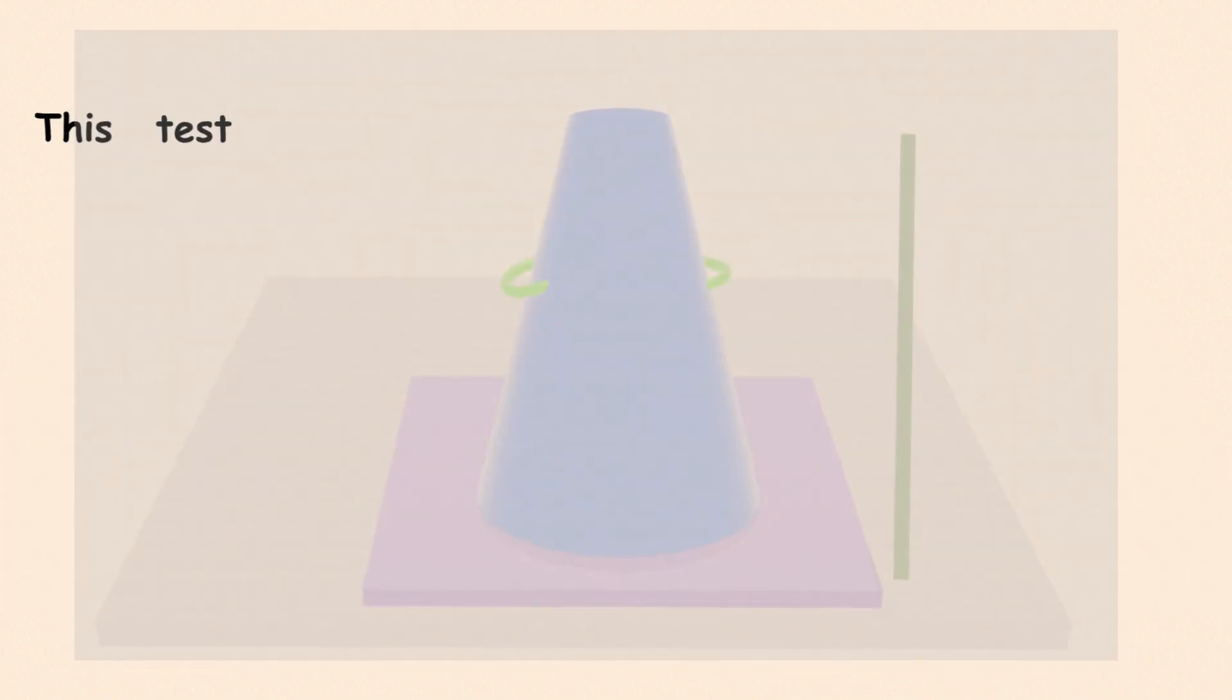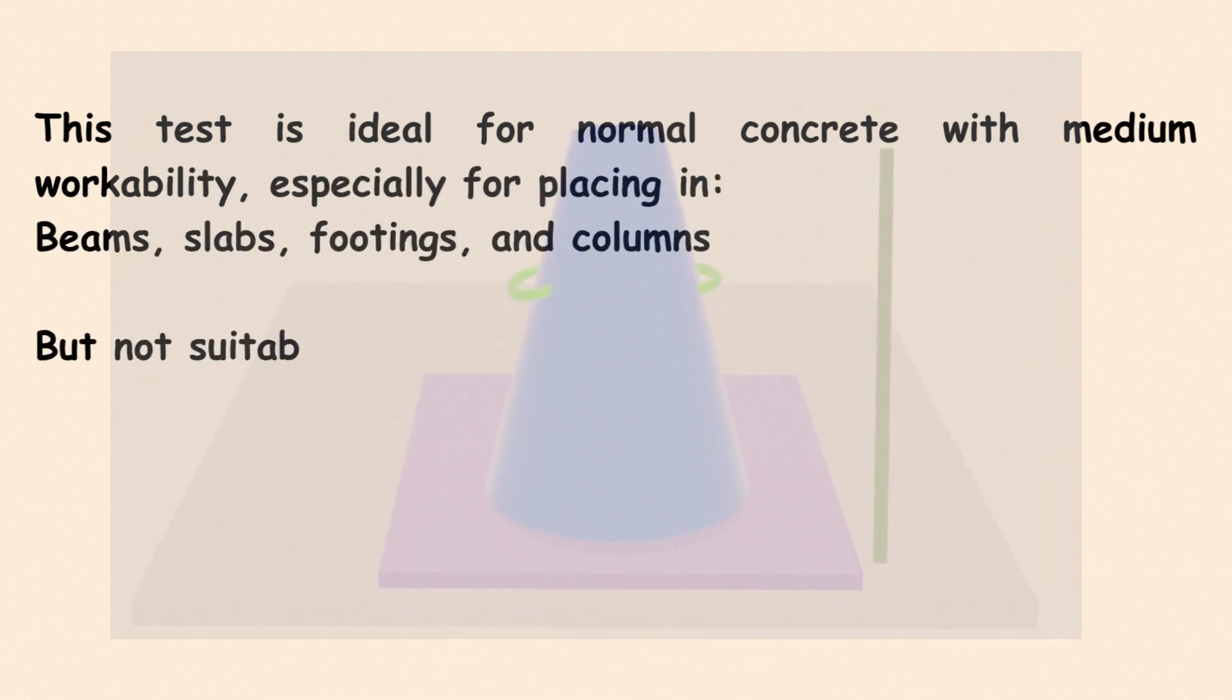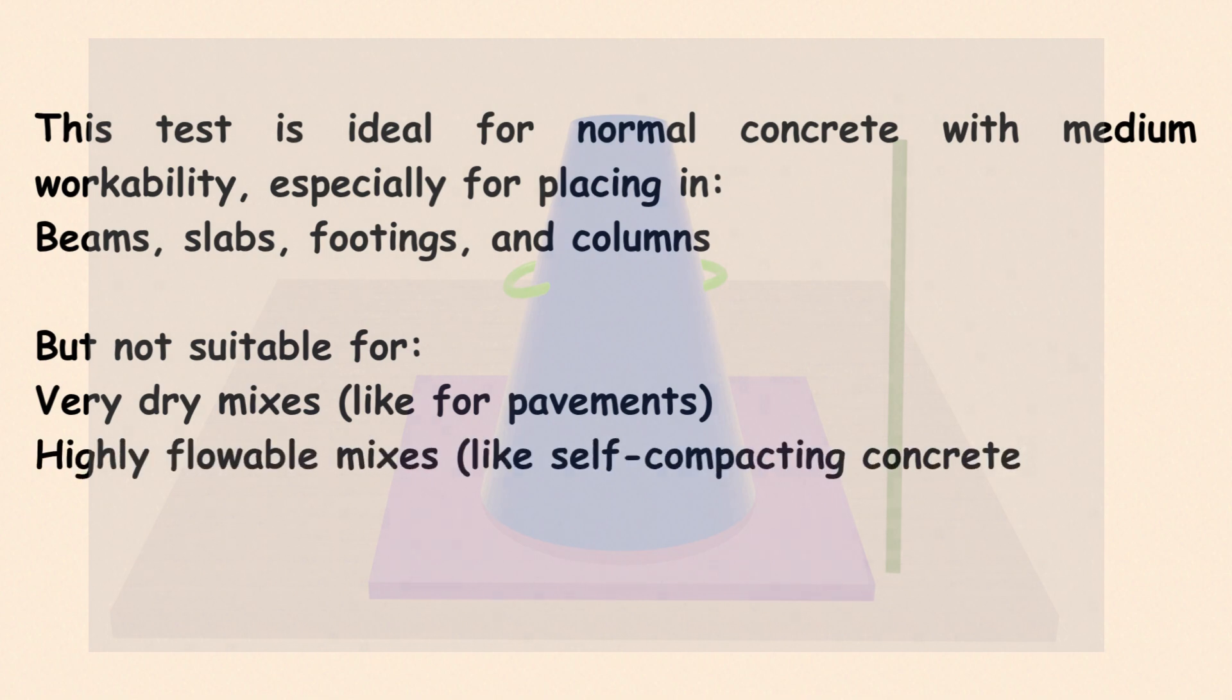The slump test is suitable for normal concrete used in beam slabs, footings, columns. But it's not suitable for dry mixes, like those used in pavements, highly workable or self-compacting concrete.